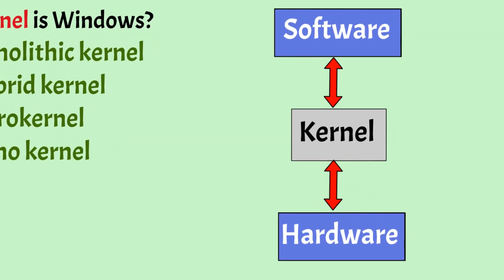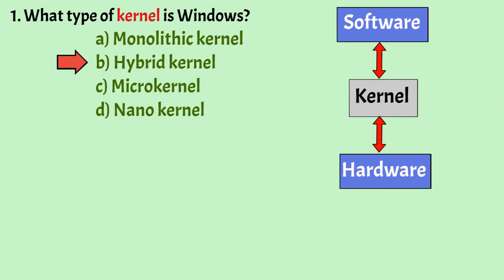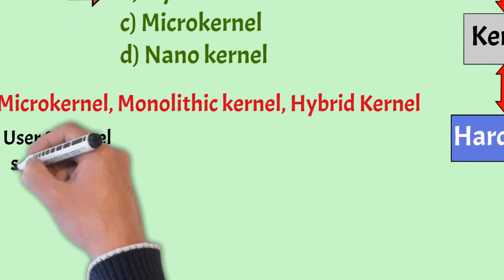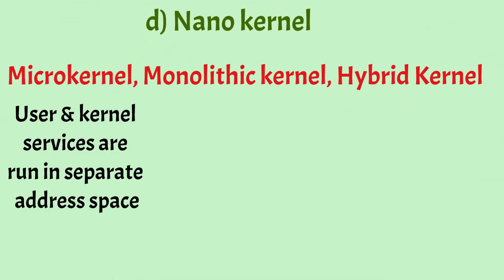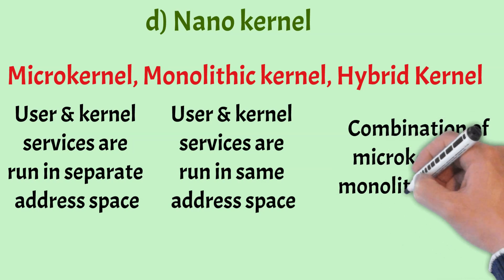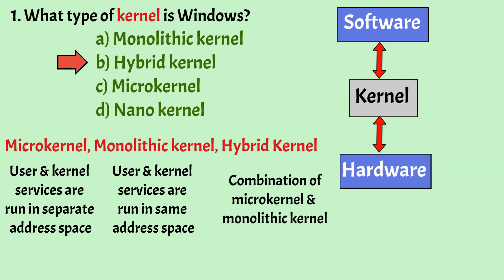The kernel is an important part of the OS and manages the operations of a computer and its hardware. There are many types of kernels such as Micro Kernel, Monolithic Kernel, and Hybrid Kernel. In Micro Kernel, user and kernel services are run in separate address space, which reduces the size of the kernel and OS, but also reduces execution speed. In Monolithic Kernel, both user and kernel services are in the same address space, making execution faster. A Hybrid Kernel combines features of both, and Windows uses a Hybrid Kernel.